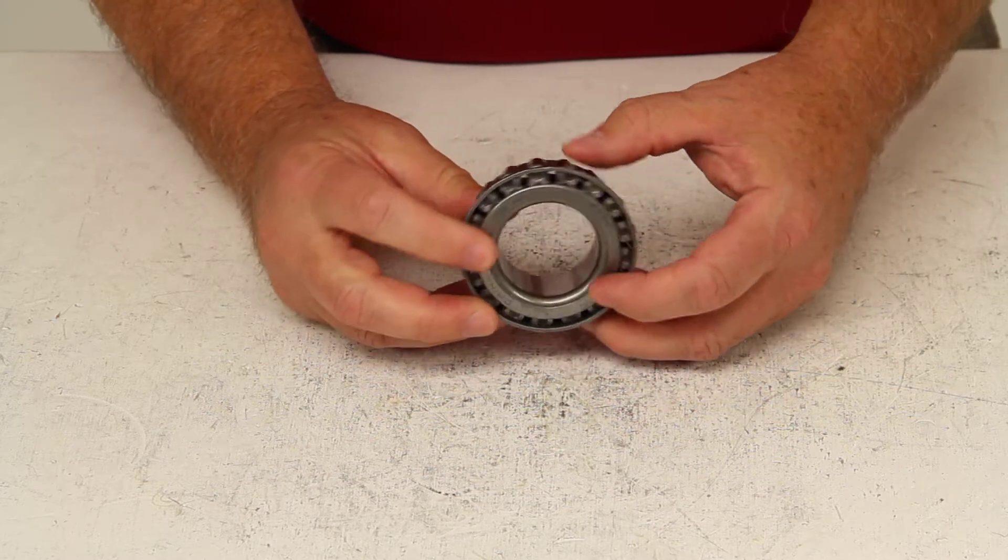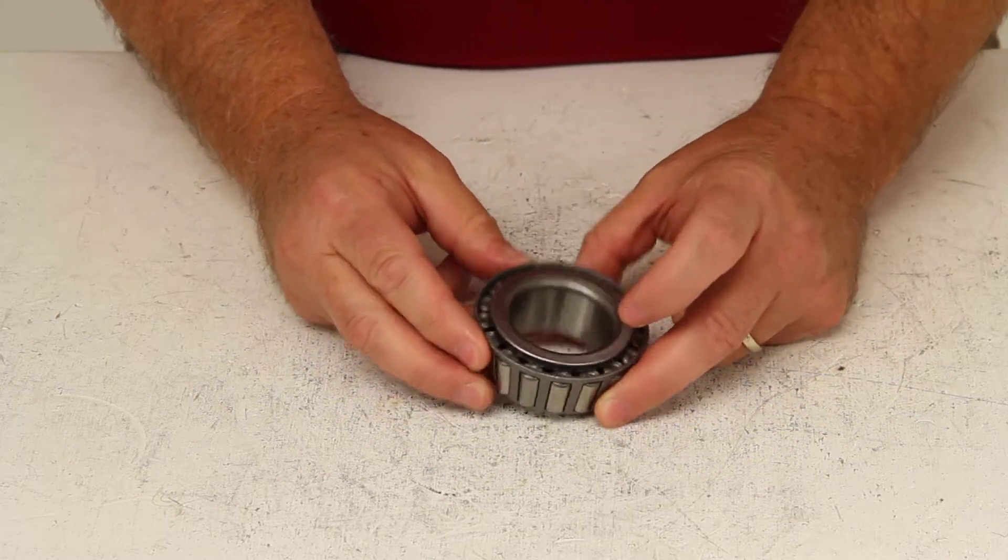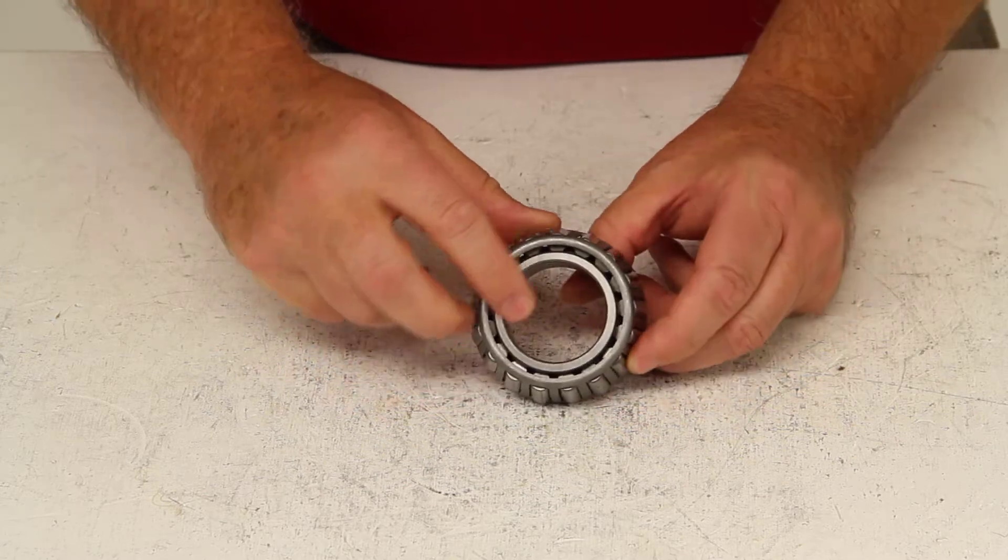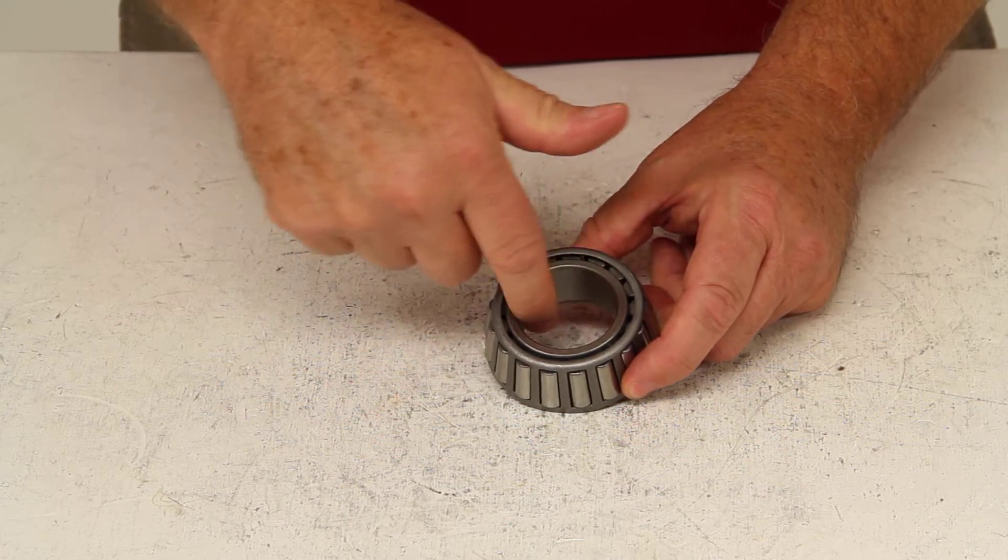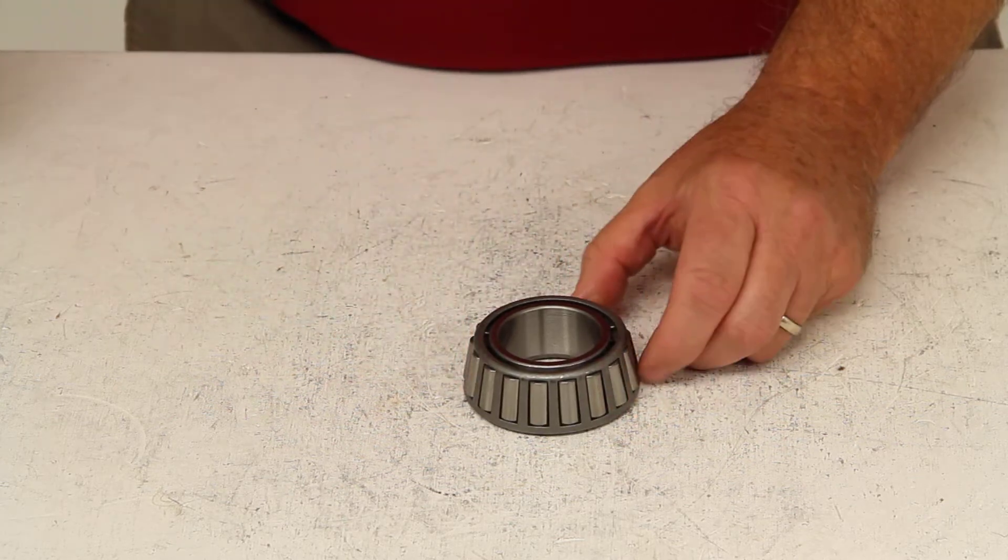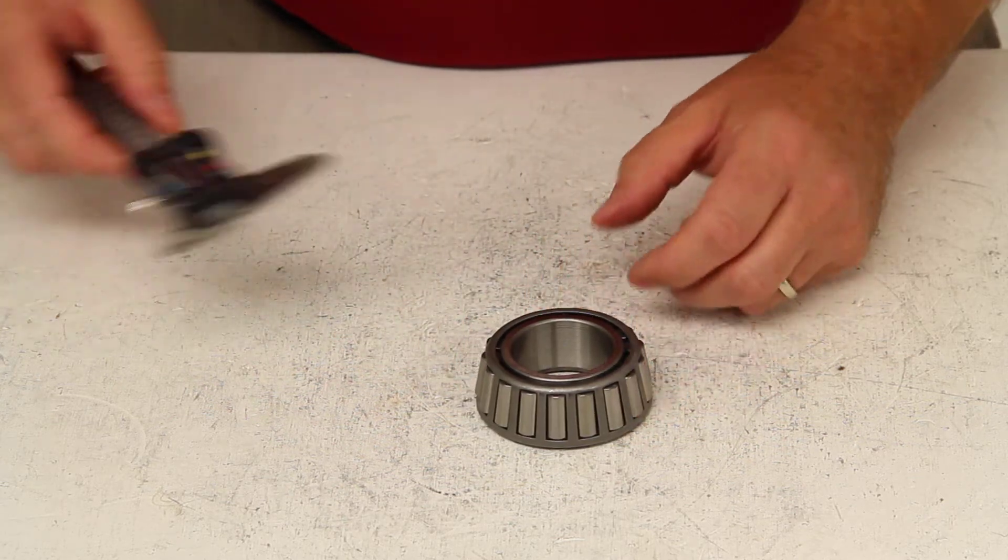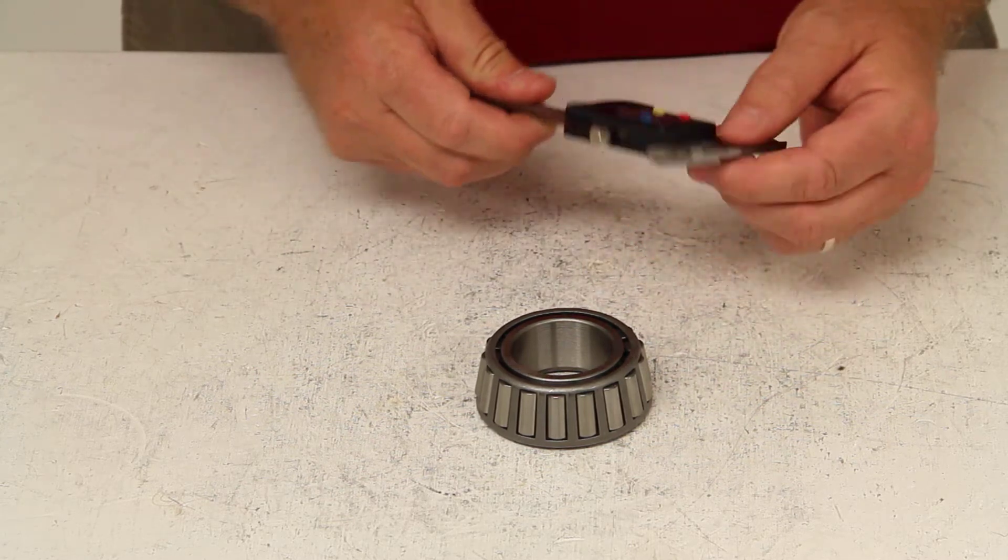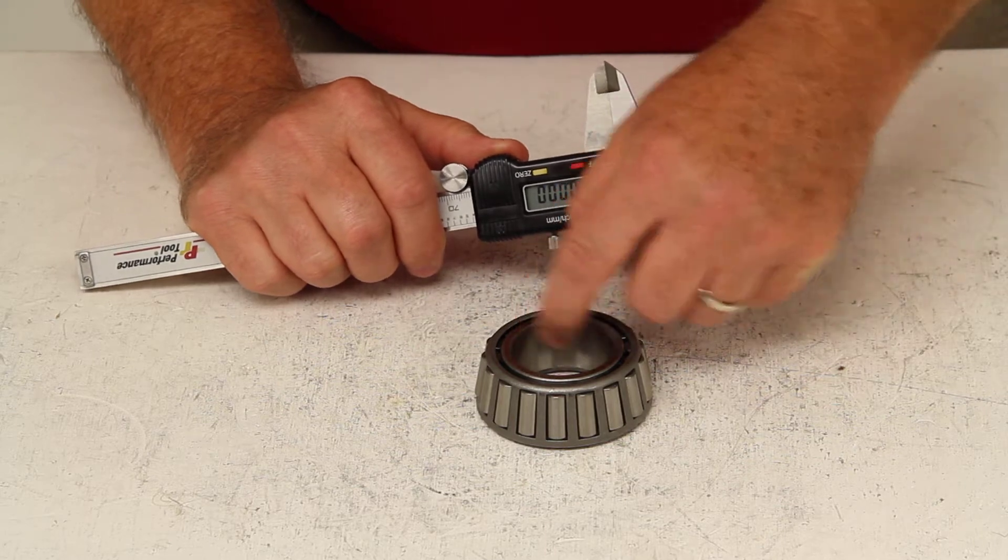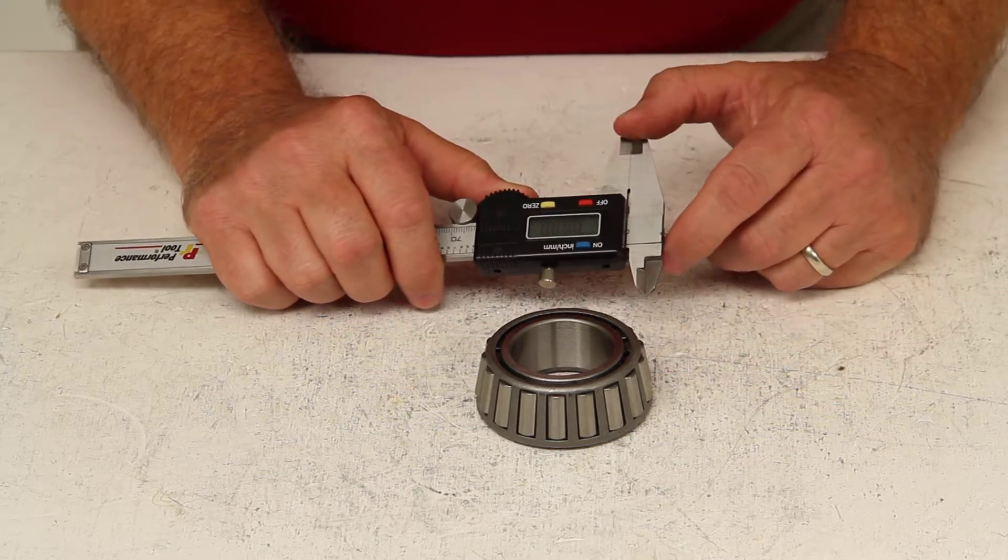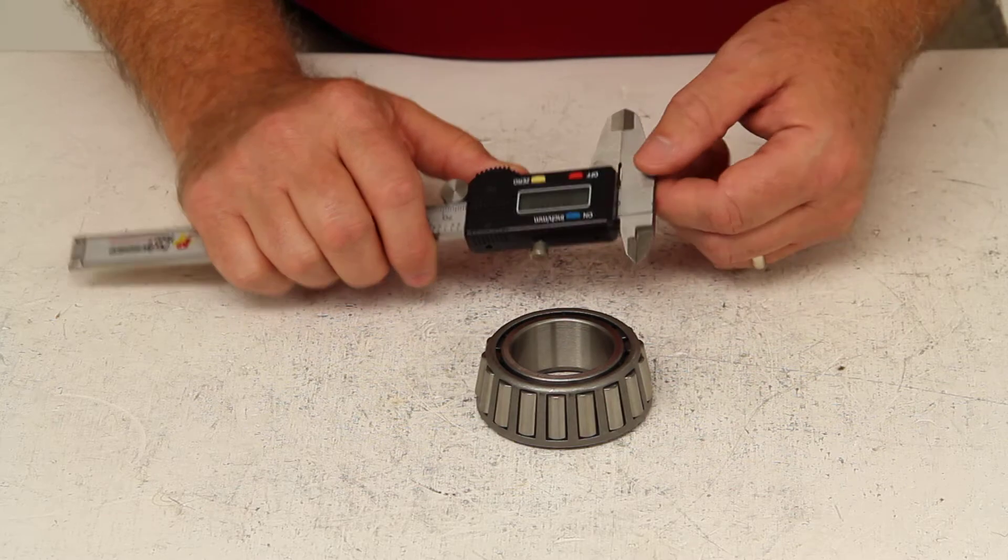Now, if you do not have the part number off the bearing, the only other way to get the correct one is to measure the inside diameter of this inner ring right here on the bearing. To do that, you would need to use a digital caliper because it would read in thousandths of an inch, which that measurement would be. A regular ruler or tape measure would not give you the correct measurement.